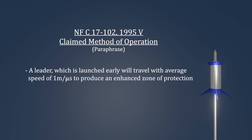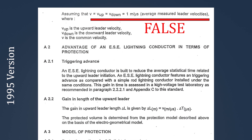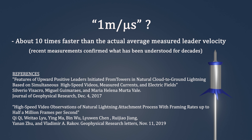A leader which is launched early will travel with an average speed of 1 meter per microsecond to produce an enhanced zone of protection. An obvious empirical problem with the 1995 version of the standard is the claim that the average measured leader velocity is 1 meter per microsecond, which is about 10 times faster than the actual average measured leader velocity, as taken with high-speed video in different locations around the world and published in reputable scientific journals.